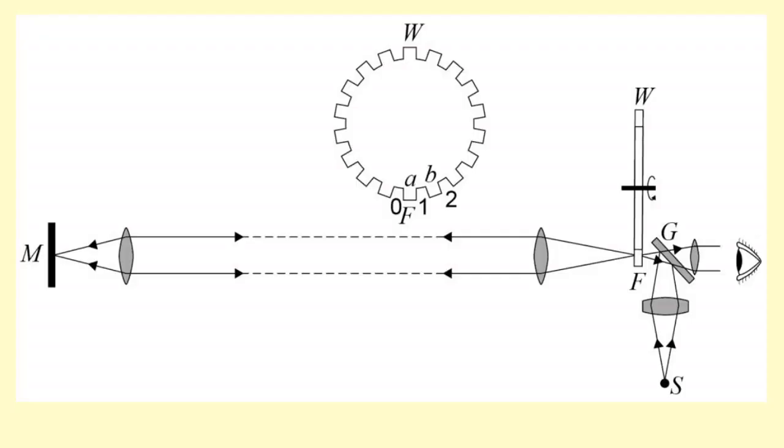We've got the exact same setup here. The light leaves at source S, reflects off the partially reflecting mirror G, it goes to the bottom of the wheel, the rotating wheel which is labeled W, as shown here as well, and it goes to the bottom of the wheel at point F.